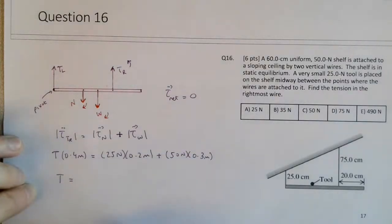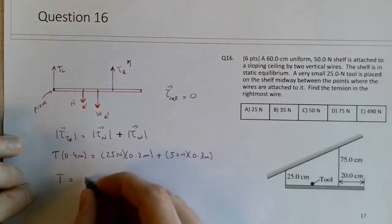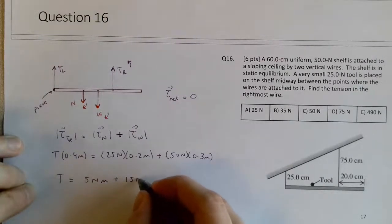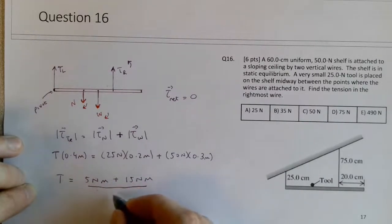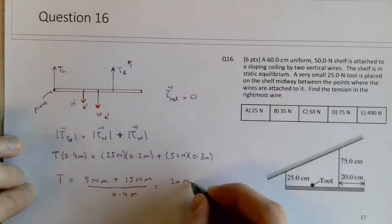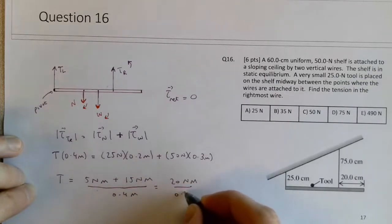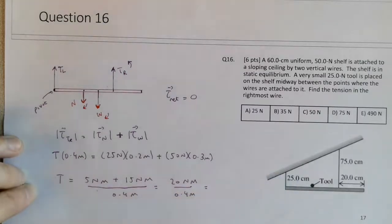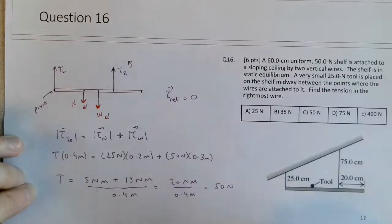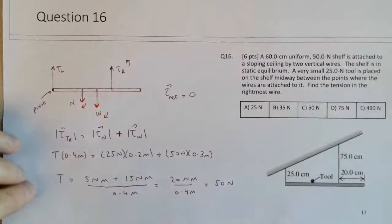So this leaves you here with 5 Newton meters, plus 15 Newton meters, all divided by 0.4 meters. So that's 20 Newton meters divided by 0.4 meters, which would give you 50 Newtons in the rightmost wire.